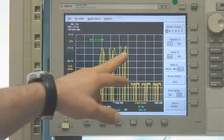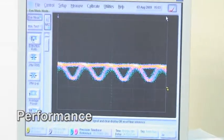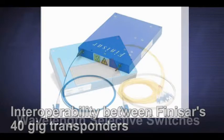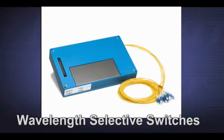In this video, we show how the loop is used to ensure performance and interoperability between Finisar's 40 GHz transponders developed here in Israel and Wavelength Selective Switches developed in Sydney, Australia.